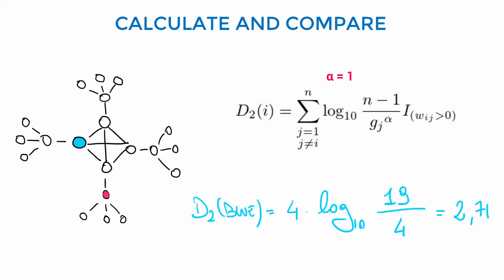Let's see, let's calculate D2 for the two nodes, since this is an unweighted network, and let's take alpha equal to 1. The node in blue is connected to three other nodes in the core,